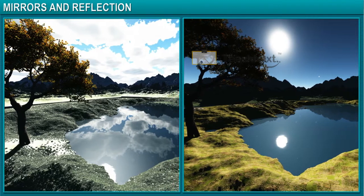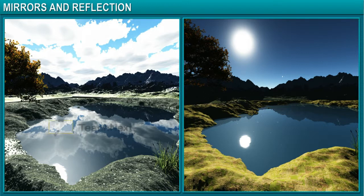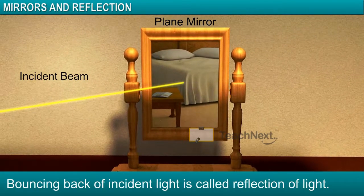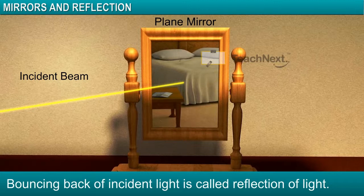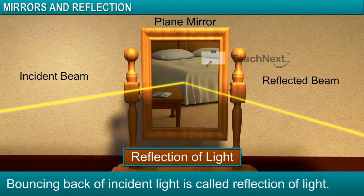You must have noticed that you can observe clouds in the sky in a still pond in daytime. But you can't really see the dark sky — you see only the bright moon and the stars in a still pond at night. When light is incident on any smooth, shiny surface like a mirror or a tin sheet, it reflects back. This is called reflection of light.